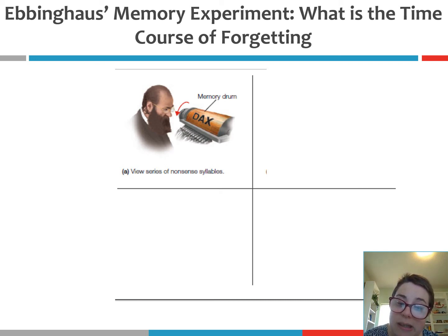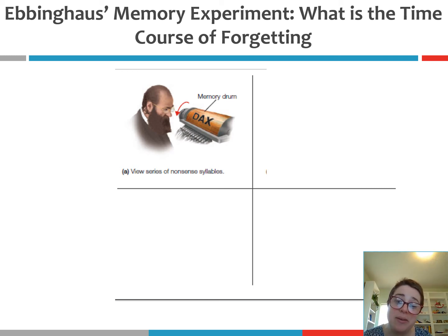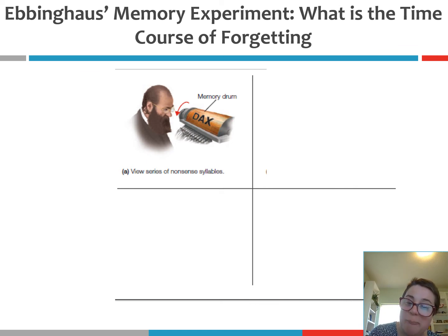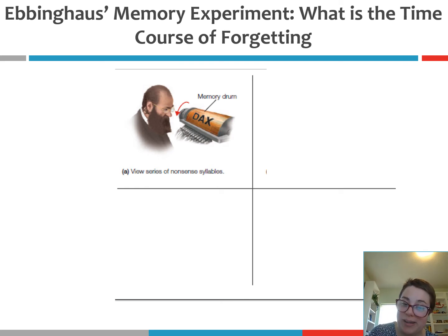Nonsense syllables were basically three-letter non-words that had the same phonetic properties of words. For example, 'Dax' or 'Lem' — those are pronounceable like words, but they have no meaning attached to them, which means we have no prior association with them. So it's basically the purest memory probe he could get, because there's no prior learning or memory of this information.